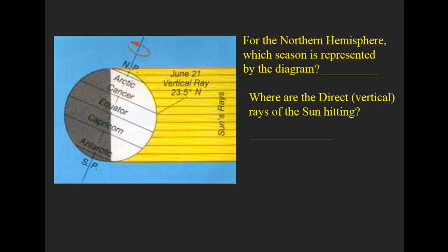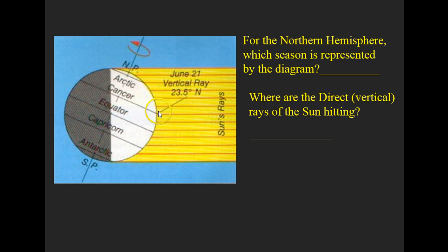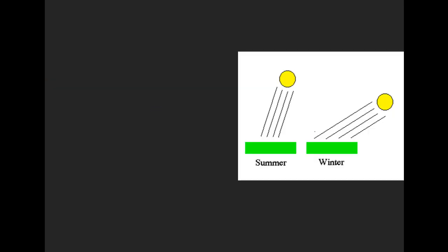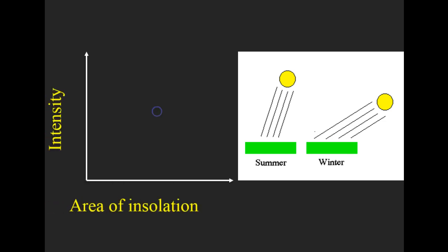They're actually showing you that this is June 21st, because the northern hemisphere is tilted towards the sun. I know that because I'm looking at the North Pole and seeing that it's tilted towards the sun. I also see that the direct rays are coming and hitting at 23.5 degrees north — it's summer, and it's hitting the Tropic of Cancer, which is 23.5 degrees north.